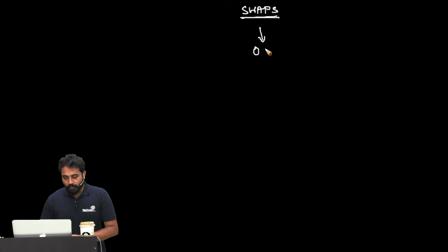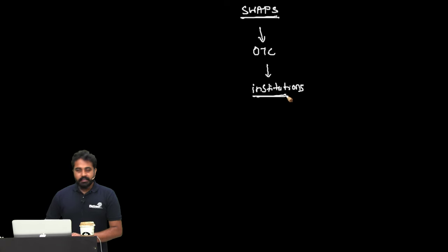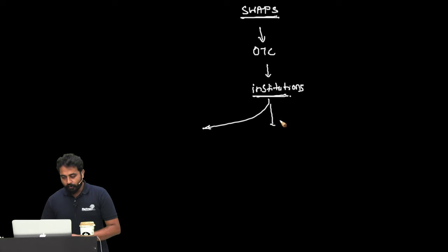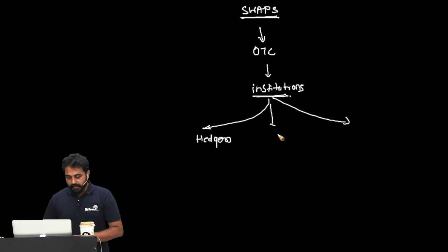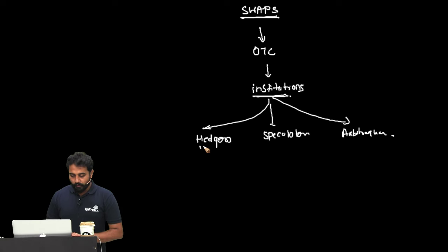What we know about a swap is it's an OTC product. OTC is over-the-counter, and it's built for institutions, not retailers. Institutions such as large investment banks, banks, and financial companies are going to get into this type of product. Like any other product, there would be three players in this market: hedgers, speculators, and arbitrageurs. These are the three big groups who are going to be operating in this space, and we'll do examples of each one of them.